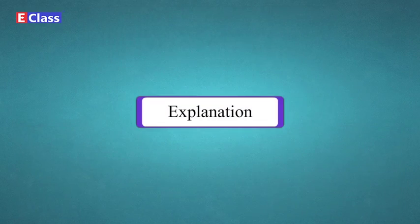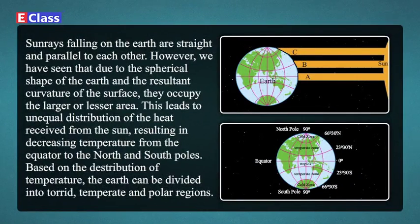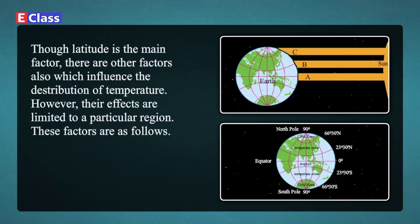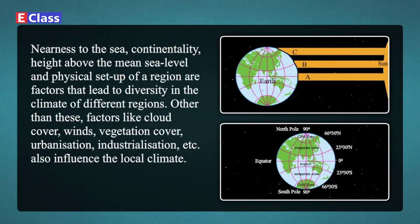Explanation: Sun rays falling on the earth are straight and parallel to each other. However, due to the spherical shape of the earth and the resultant curvature of its surface, they occupy a larger or lesser area. This leads to unequal distribution of heat received from the Sun, resulting in decreasing temperature from the equator to the north and south poles. Based on the distribution of temperature, the earth can be divided into torrid, temperate, and frigid zones, or tropical, temperature, and polar regions. Though latitude is the main factor, other factors also influence temperature distribution, including nearness to the sea, continentality, height above mean sea level, and physical setup of a region.